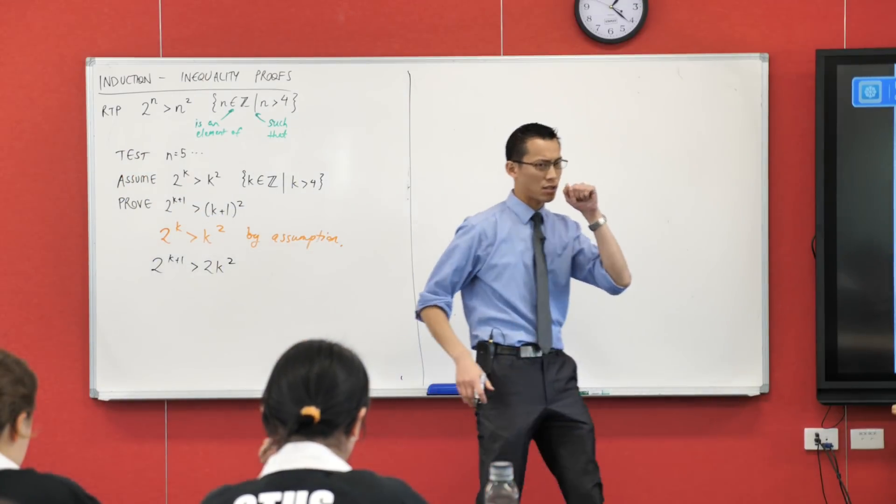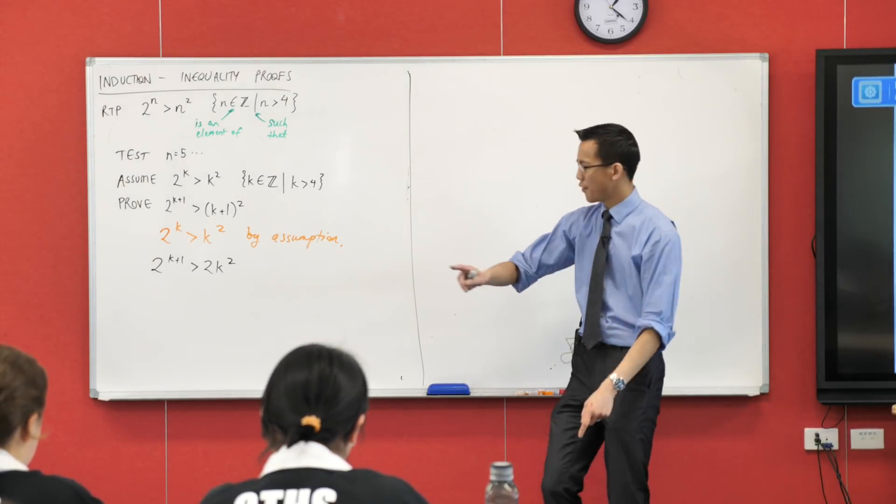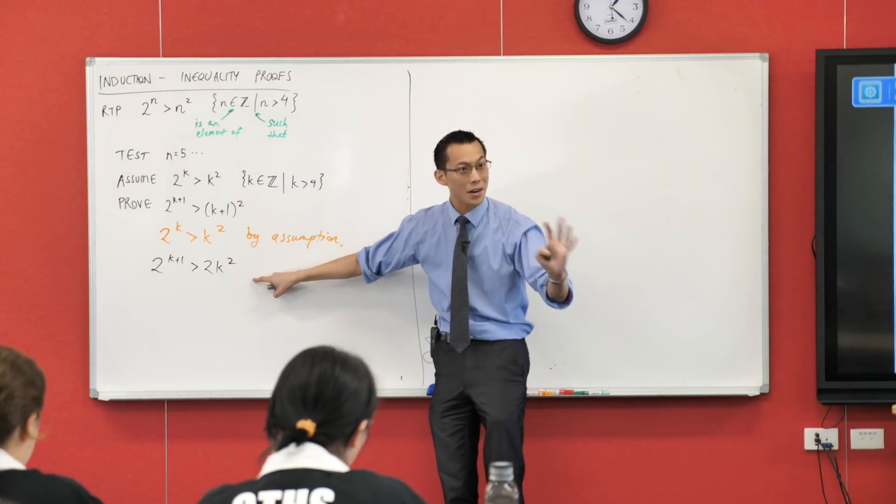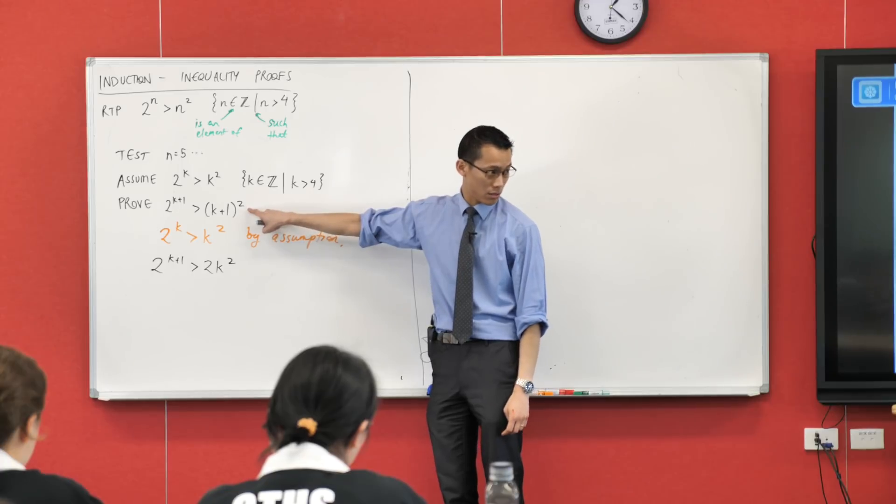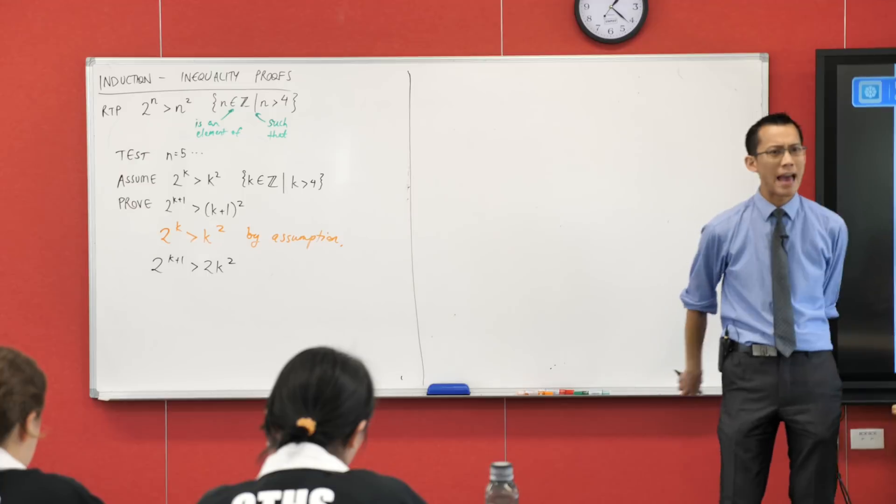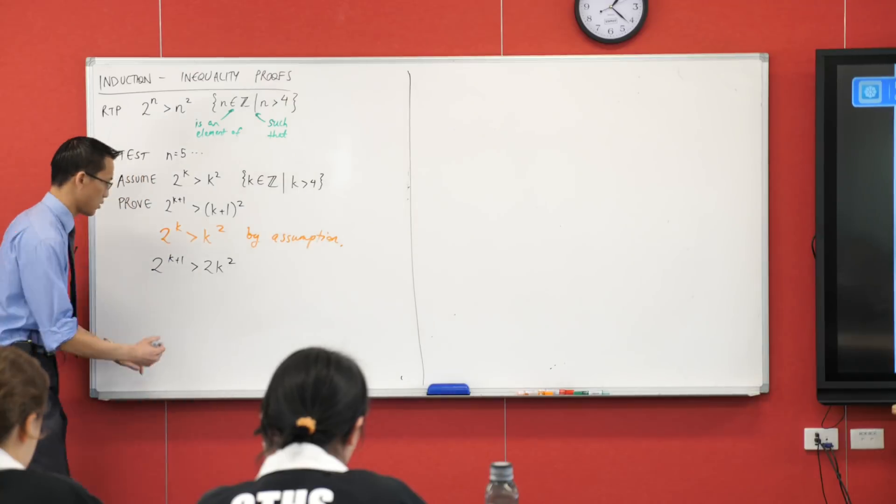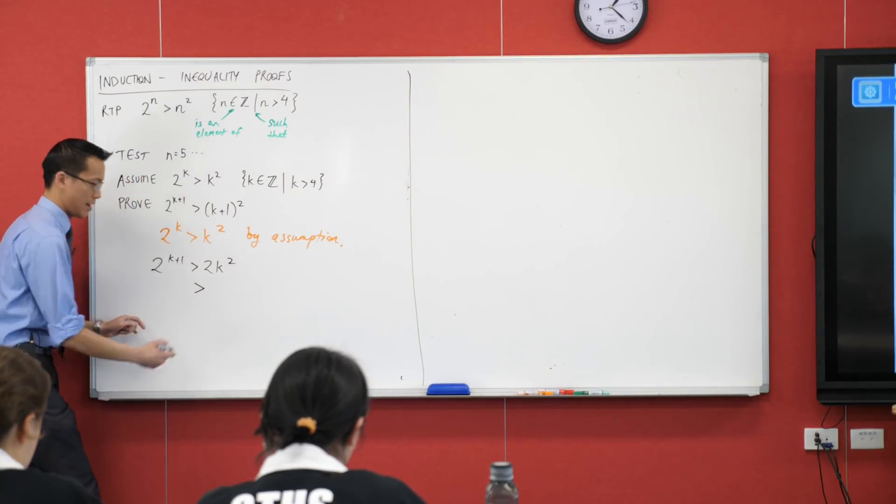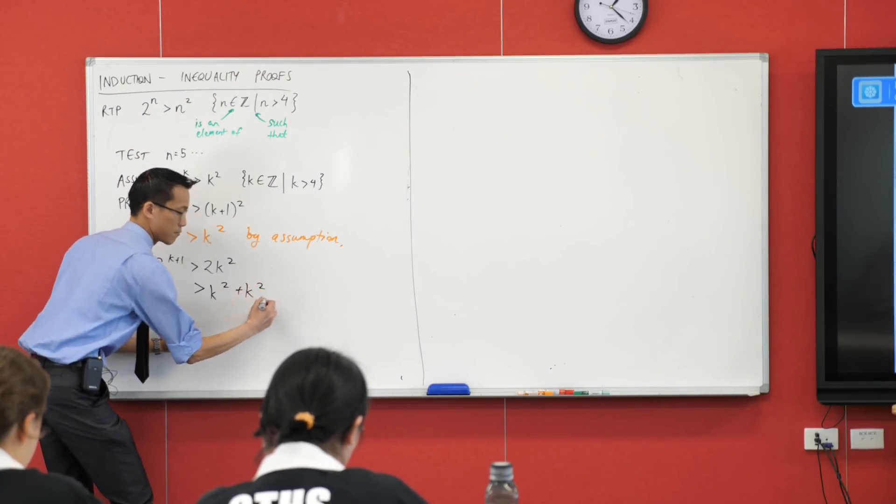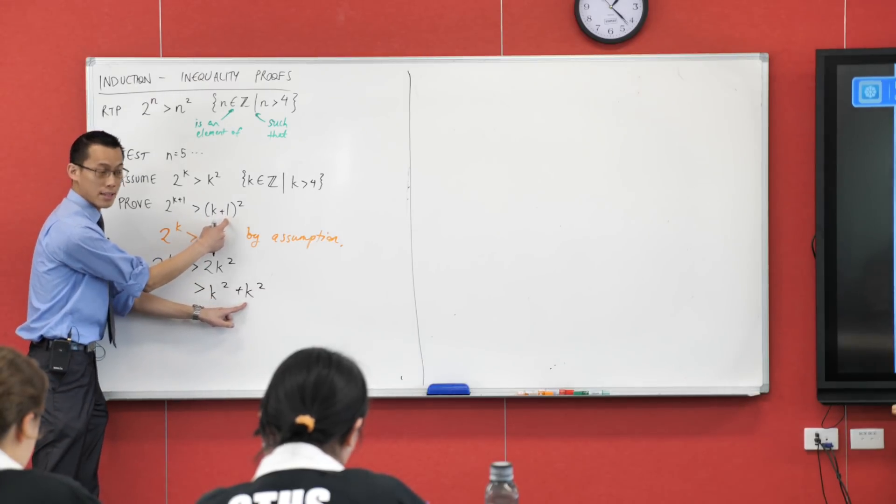Now, you've got 2k squared there and have a look, as with all induction proofs, not just inequalities, you should always have one eye on your working and then one eye on your destination. Where are you headed? Where are you trying to get to? This is where you're trying to get to. Have a look at it. How many k squareds will be in there once I expand it out? How many? Just the one, right? And I've got like a spare here, right? So, here's what I'm going to do. I'm going to break this apart into, well, here's the one that I want, and then I've got some extra stuff, right?